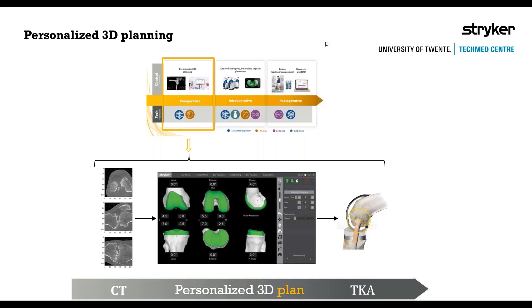Once the plan is generated, it can be transferred to the robot, and on the day of surgery the total knee arthroplasty can be conducted. MAKO will drive the surgeon to precisely place the implants where decided and also assist with the dynamic balancing of the knee during surgery. I will give the floor to Periklis, who will talk in depth about why a patient is prescribed for total knee arthroplasty and how he is introducing a biomechanics variable into the surgical plan generation workflow.